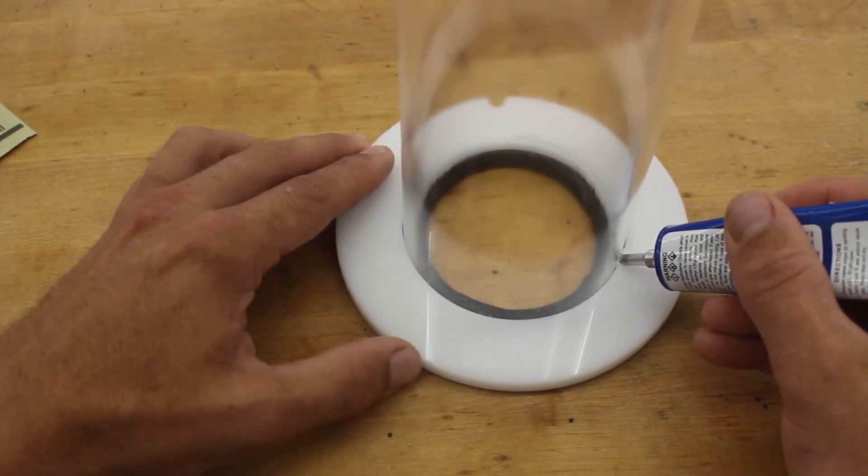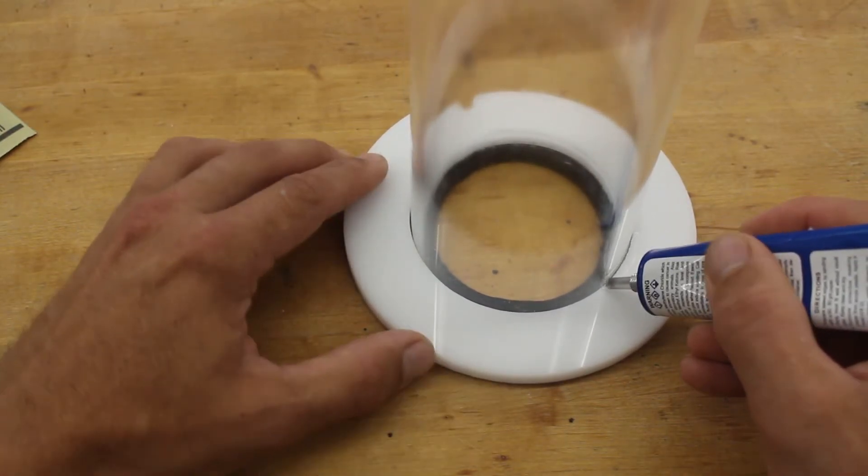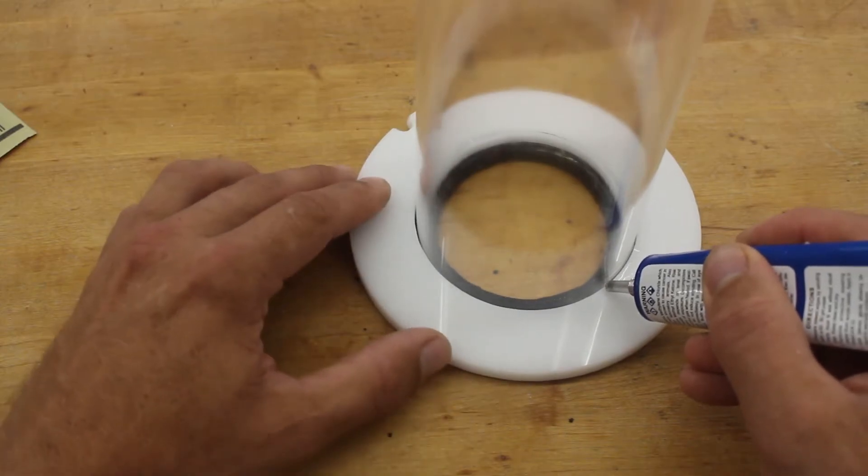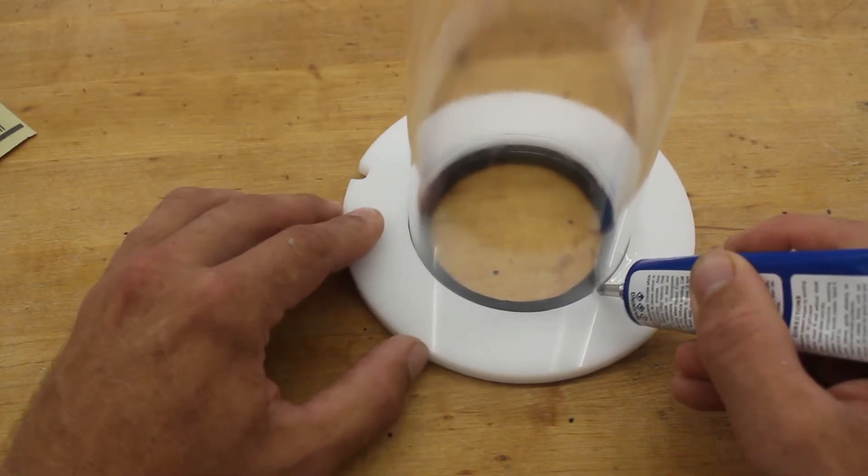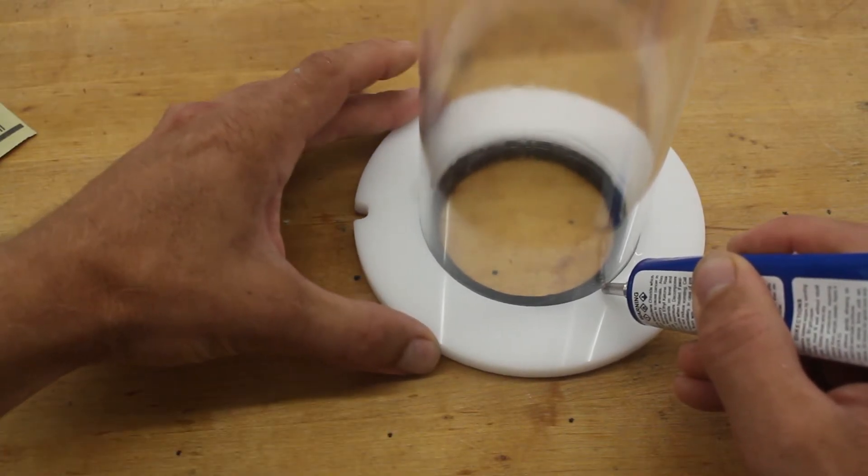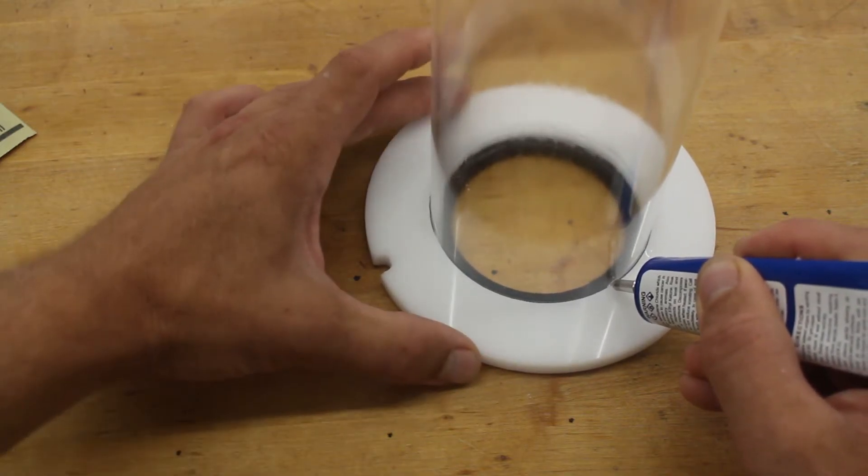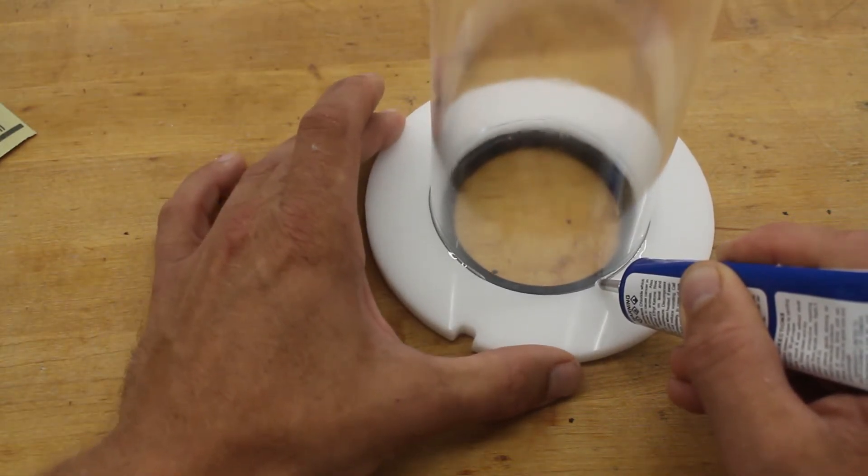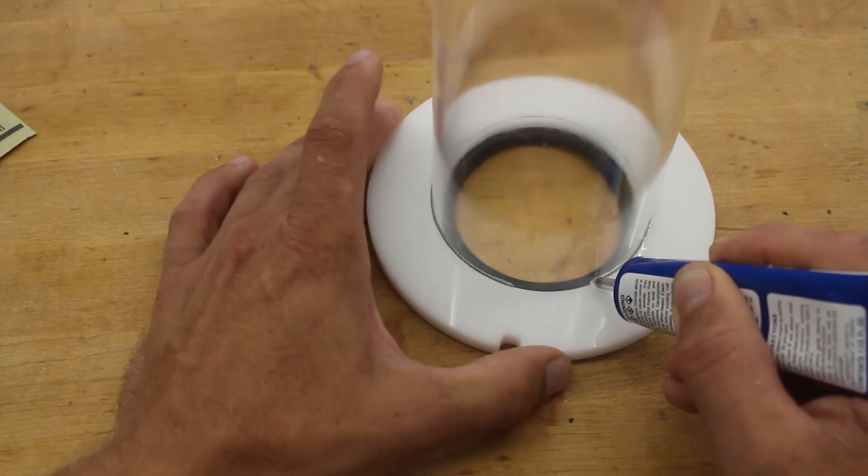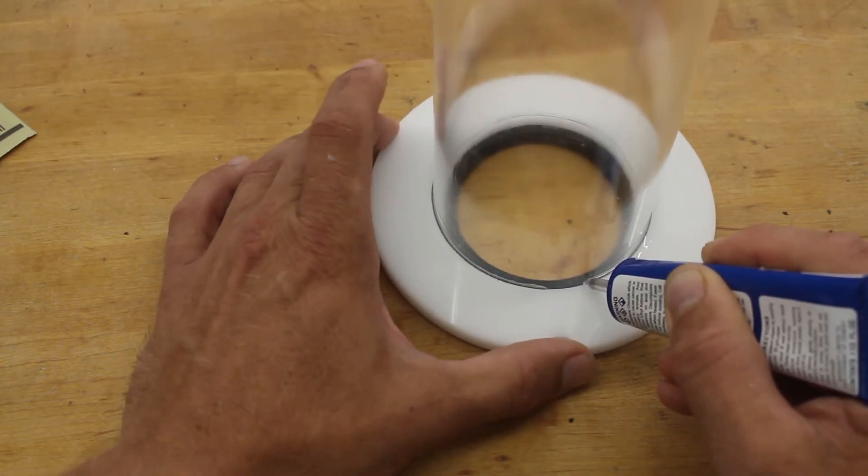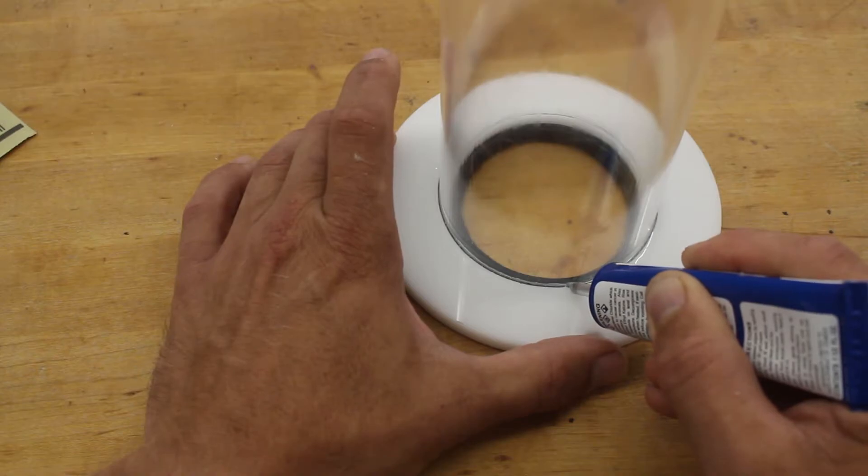Then we are going to run a thick bead of solvent around the edge. You want to make sure to give this joint 6-8 hours of curing time before moving on to the next step.